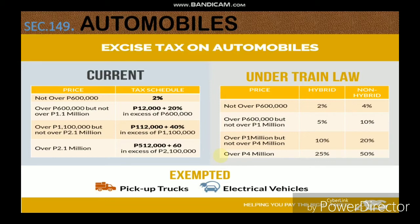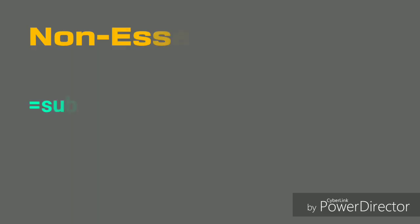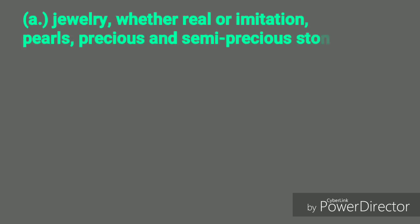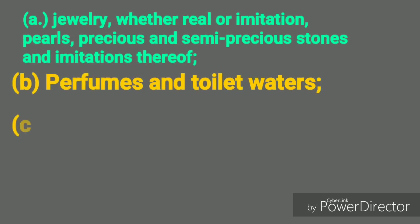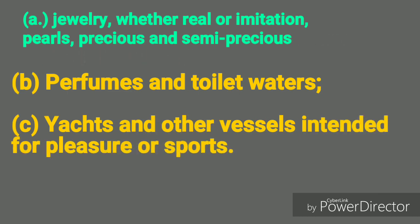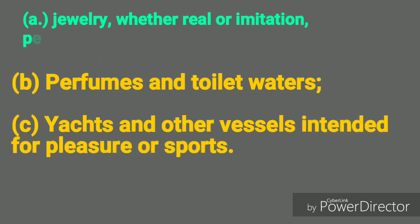Pickup trucks and purely electric vehicles are exempted from the automobile excise tax. Moving on to non-essential goods — this includes jewelry whether real or imitation, perfumes and toilet waters, yachts and other vessels intended for pleasure or sports — and these are subject to a 20% excise tax.